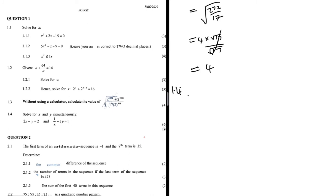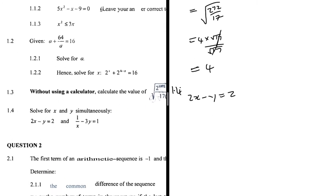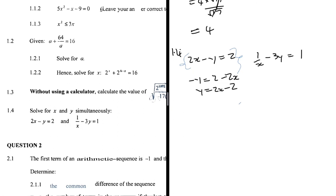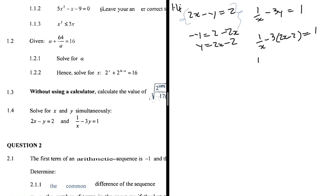Problem 1.4: solve simultaneously 2x - y = 2 and 1/x - 3y = 1. From the first equation, y = 2x - 2. Substituting into the second: 1/x - 3(2x - 2) = 1, which gives 1/x - 6x + 6 = 1.